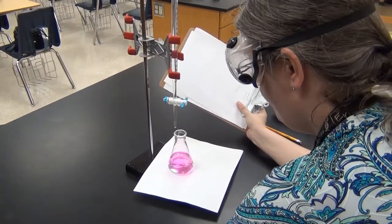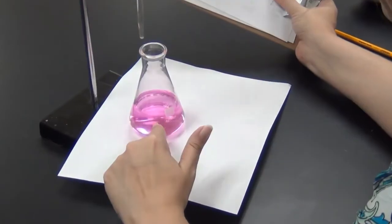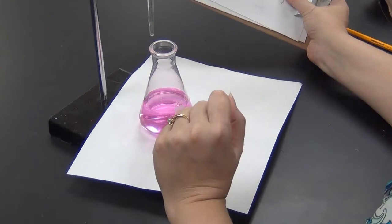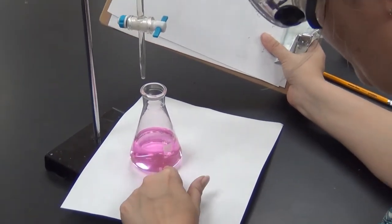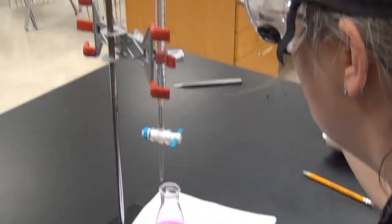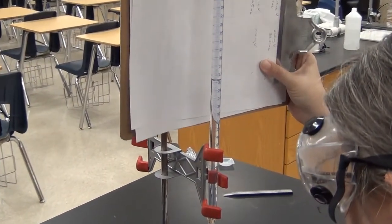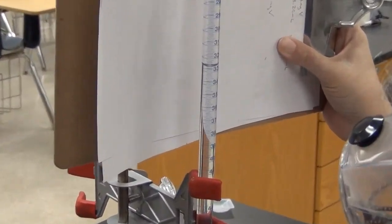So you can see we've reached the end point of our titration with our third sample here, our second acid sample, because we have a persistent pale pink color. So now I'm gonna have to bend down to get to eye level so I can get a good accurate measurement, and put the paper up to help me read this.